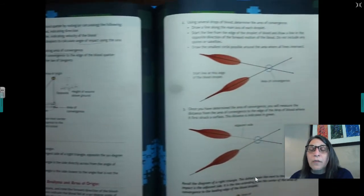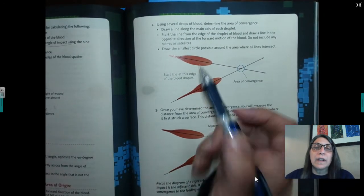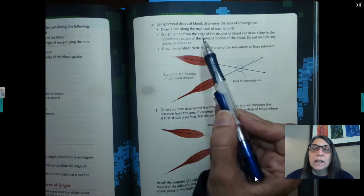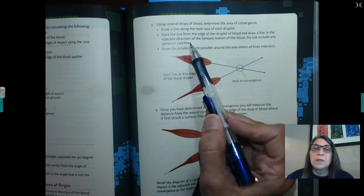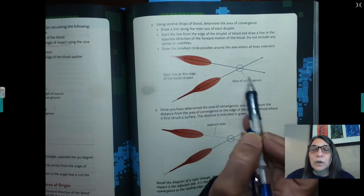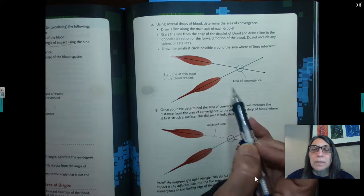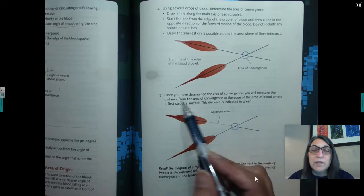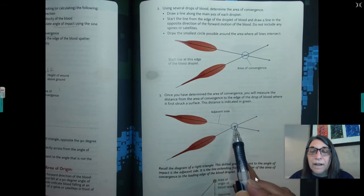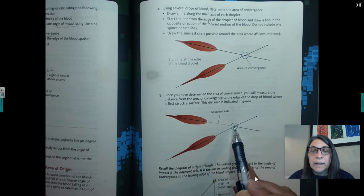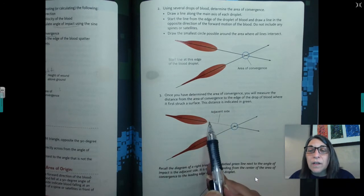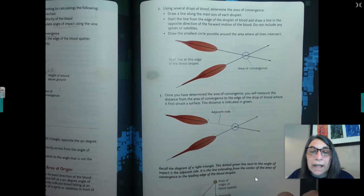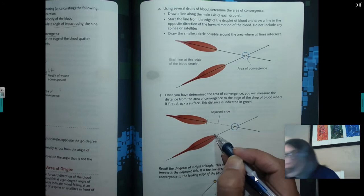That's the main thing you need to know that we're going to be doing. And I'm going to show you just an easy way to just kind of, if you can plug in numbers to a formula, you can do this. So we're going to start off with looking over here. And the first thing you're going to do is you have to use a couple of different drops of blood, draw along the main axis of each droplet, start the line from the edge of the droplet of the blood and draw it to the opposite direction. Basically what we just did earlier, you draw your two lines. You have to have at least two blood drops that you come up with your area of convergence. Then once you've determined the area of convergence, you're going to measure the distance from the middle of the area convergence to the edge of the drop of blood where it first struck the surface.